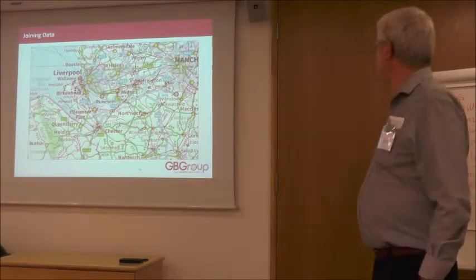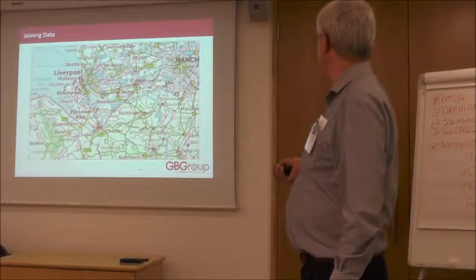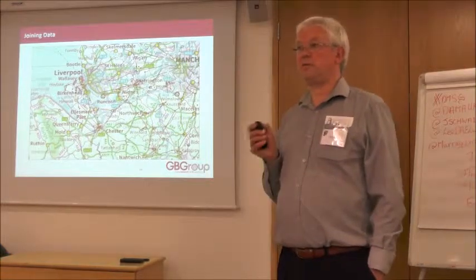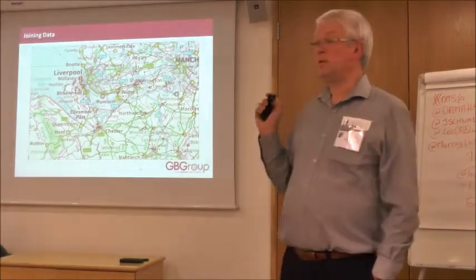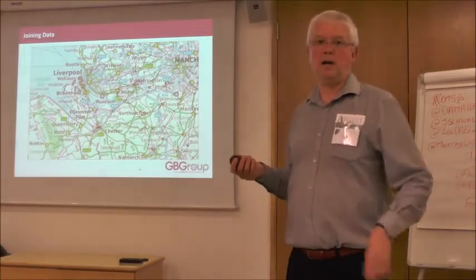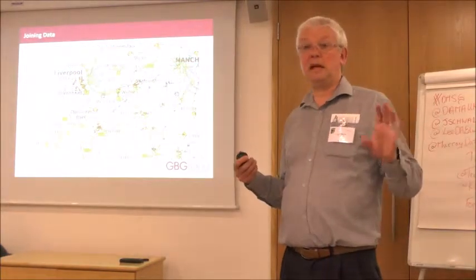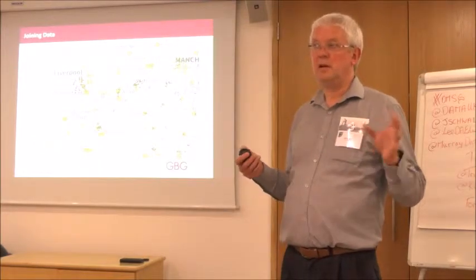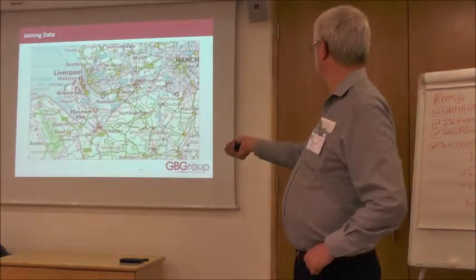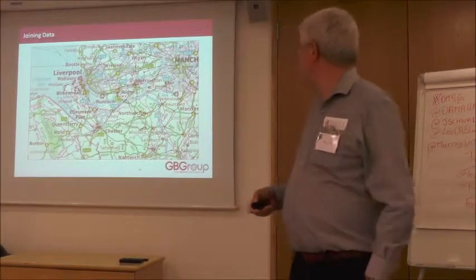Here's an example of point data. These little red dots are all GP surgeries. I took the NHS GP surgery data, joined it to Ordnance Survey Code Point to get the centroid to the postcode. It's roughly right — it won't be quite right — but a GP surgery receiving such a large volume of mail probably has its own postcode as a large user. So these show the actual location of GP surgeries throughout the Northwest.